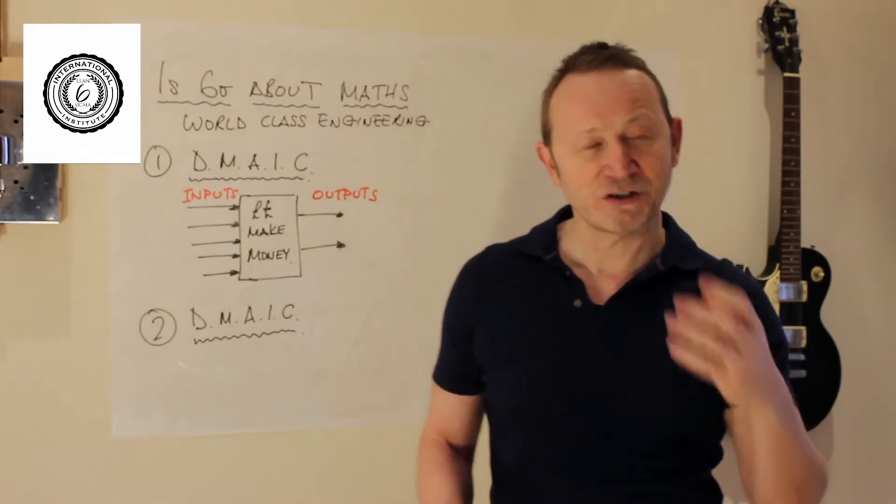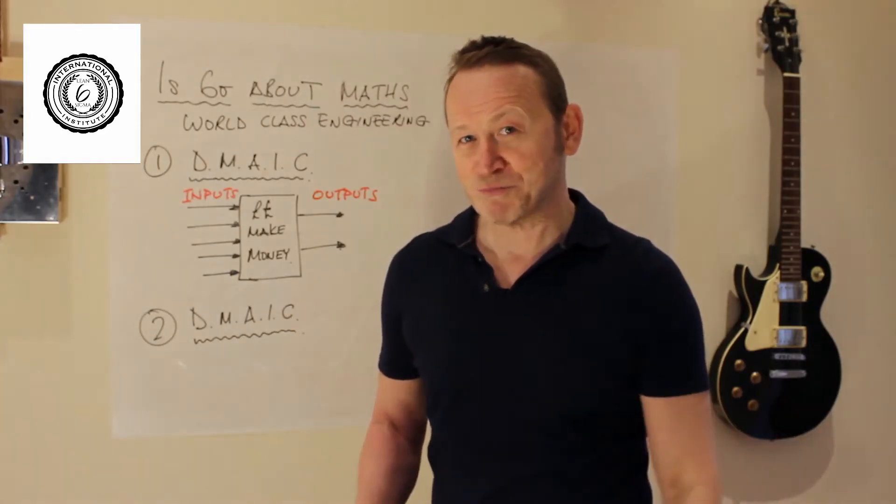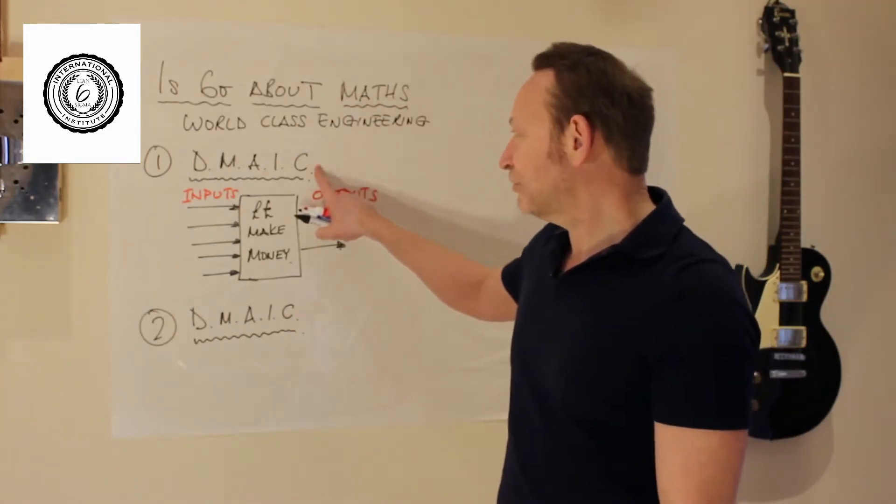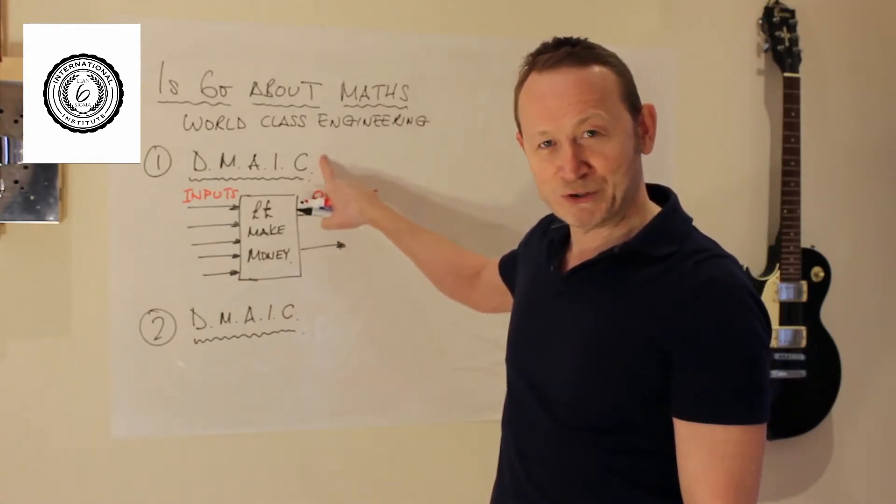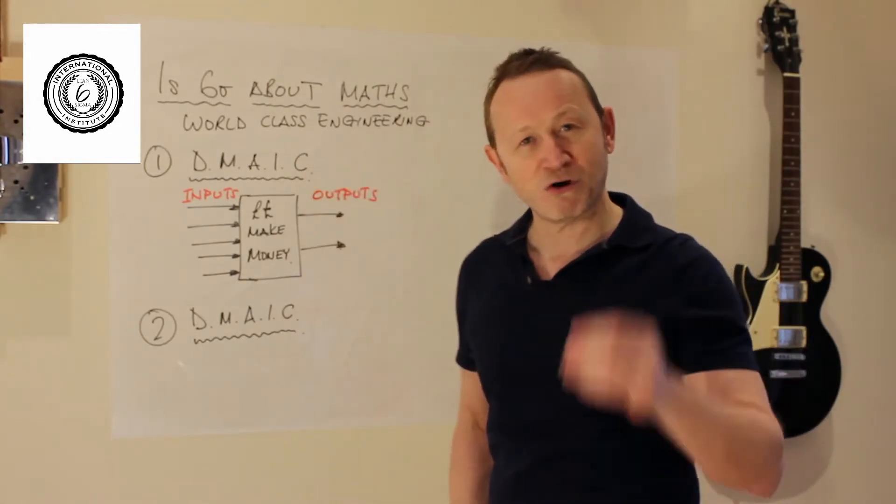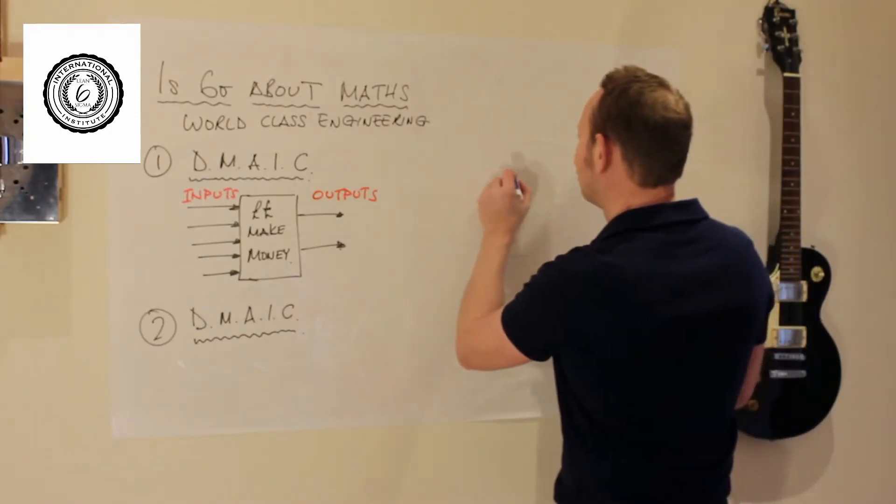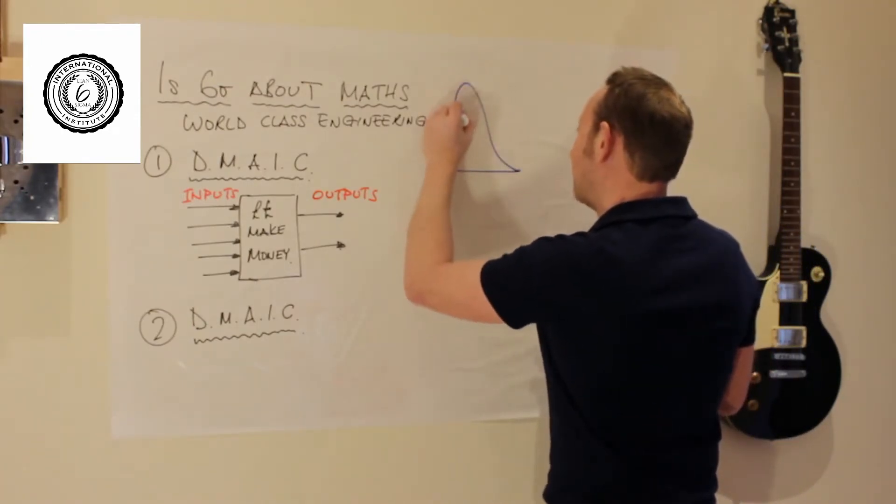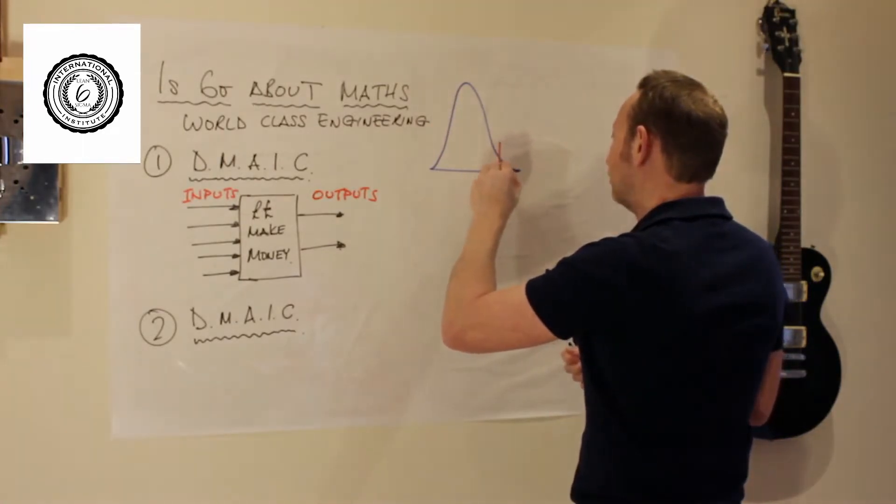Now the maths might be able to help us, but there'll be times when I can do this mathematics light. So let's take a look at DMAIC one. What does the problem look like when we're going to use DMAIC one, light mathematics? You are going to have a capability in your process that looks like this.